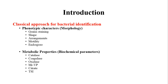Coming to the introduction, if we need to classically identify bacteria, we basically use two kinds of parameters. The first includes phenotypic characteristics, or morphological characteristics, which includes gram staining, shape, arrangement, motility, endospore, and various other features which can be identified by microscopic examinations.